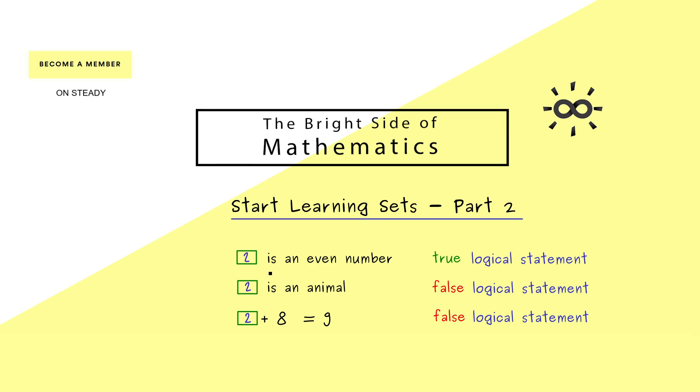This means that each sentence has a well-defined truth value, whether we know it or not. In this case, we know 2 is an even number as a true logical statement and the other ones are false. However, putting in the number 1 gives a false statement for the first one but a true one for the last one.